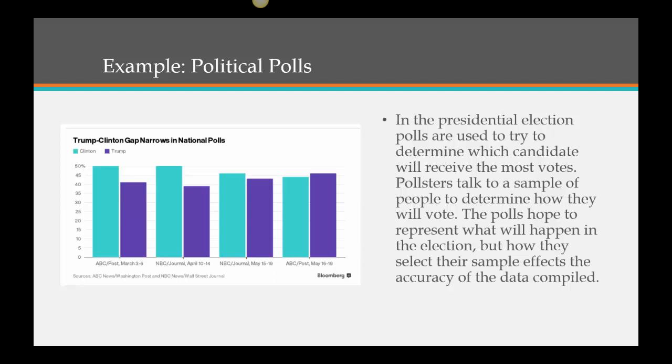In the presidential election, polls are used to try to determine which candidate will receive the most votes. Pollsters talk to a sample of people to determine how they will vote. The polls hope to represent what will happen in the election, but how they select their sample affects the accuracy of the data compiled.